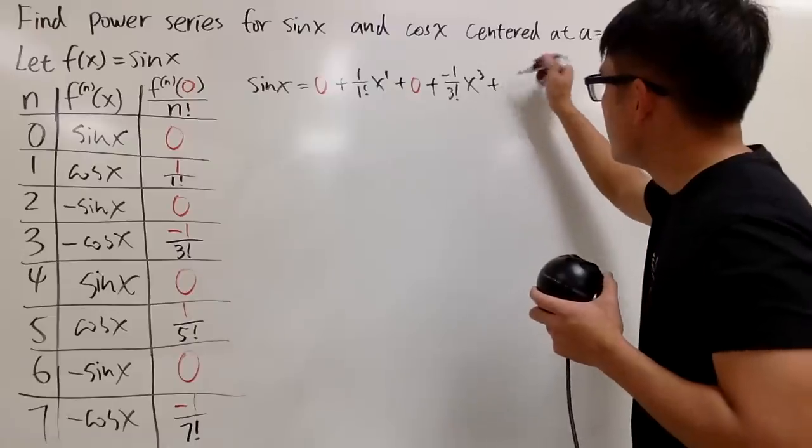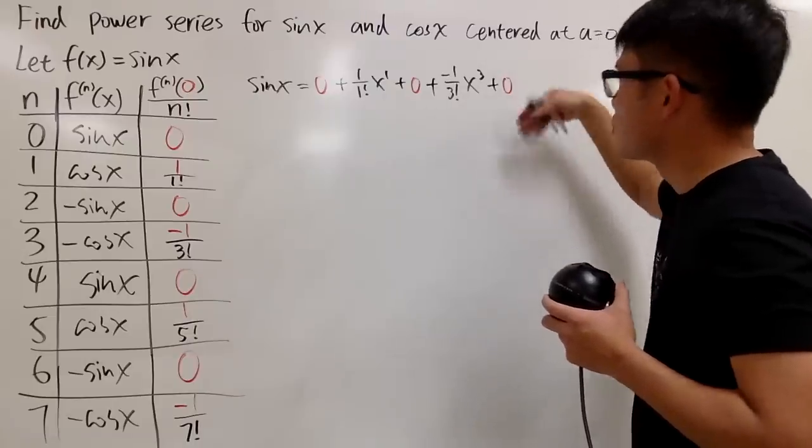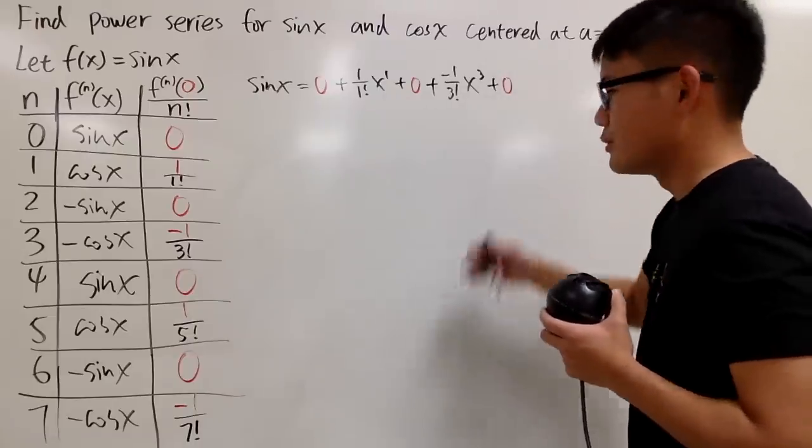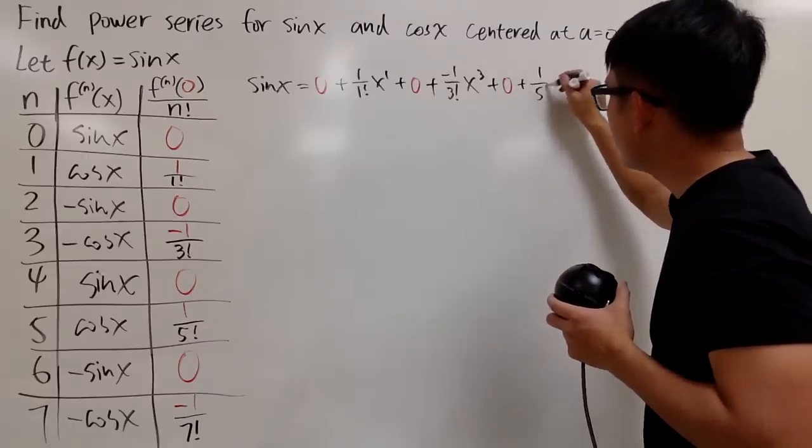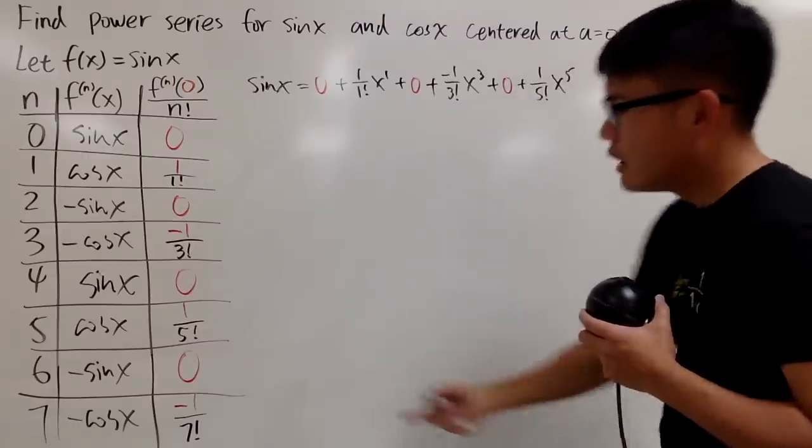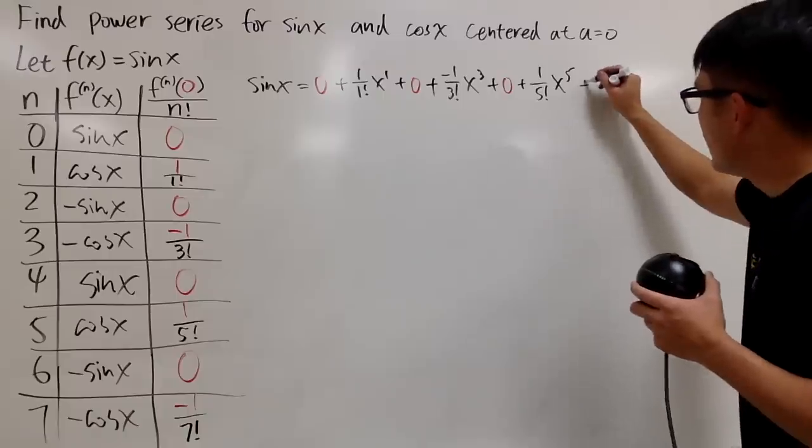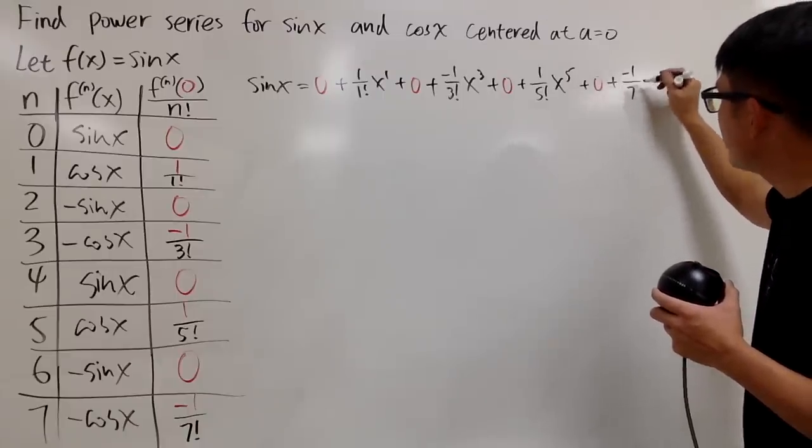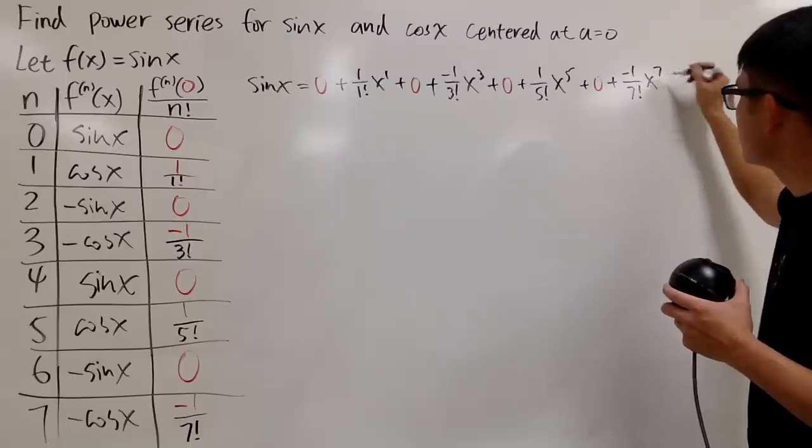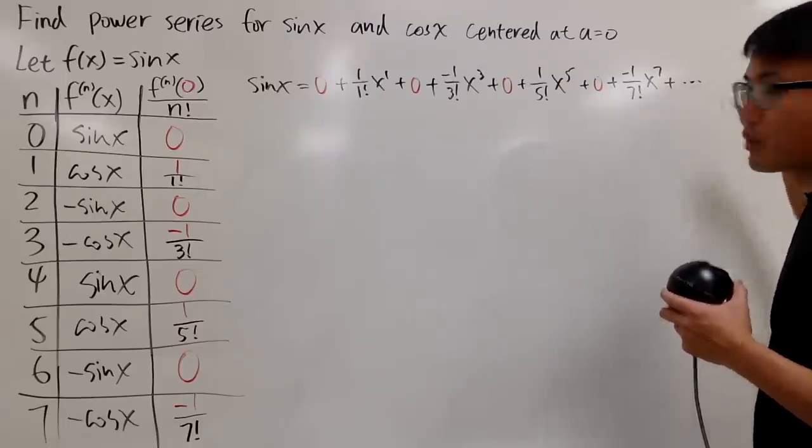And then so on. Next, we have the 0. So, technically, it's 0 times x to the fourth power, but it doesn't really matter. Next, you have plus 1 over 5 factorial x to the fifth power. And then lastly, you have plus negative 1 over 7 factorial x to the seventh power. And this right here keeps on going forever.